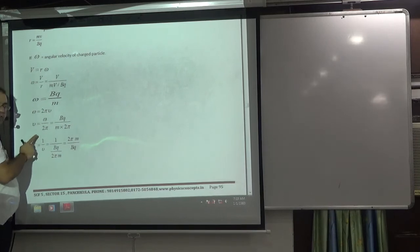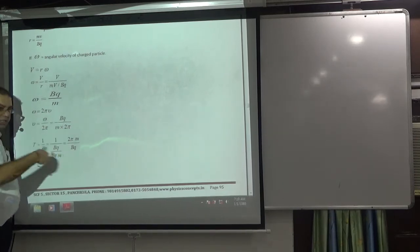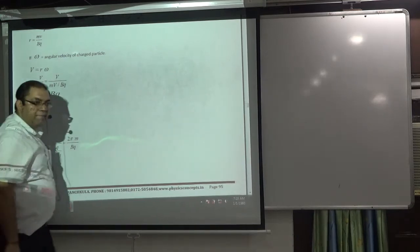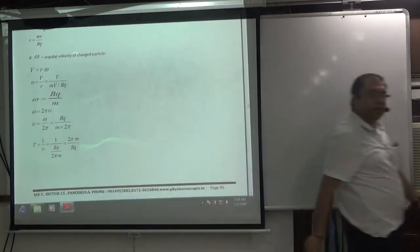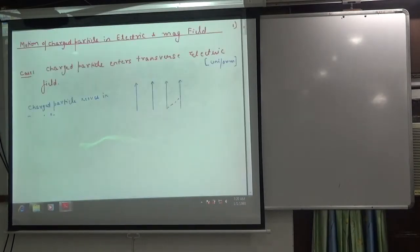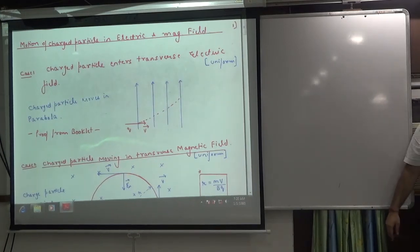Time period is equal to 1 by frequency. Time period is equal to 1. How long has it been? Put it in the box. 2πm by bq. Because this formula is important. Both of them are important. Both of them have a lot of work in numerical.